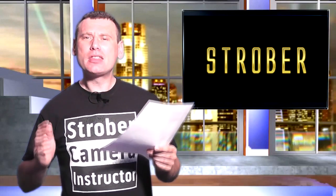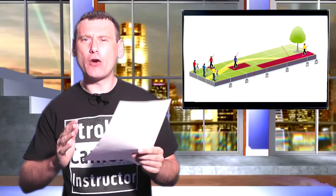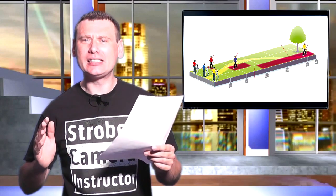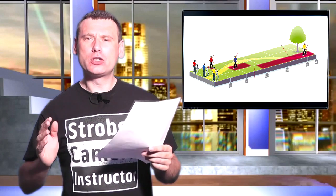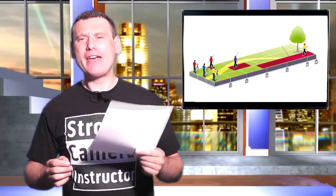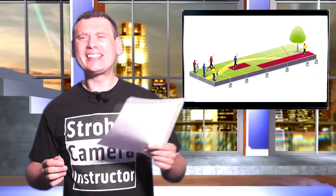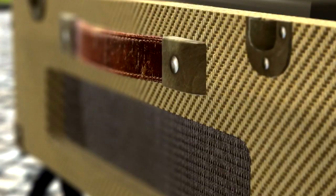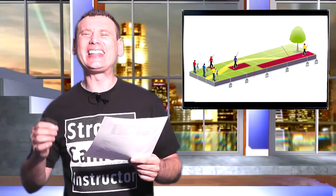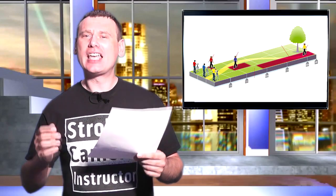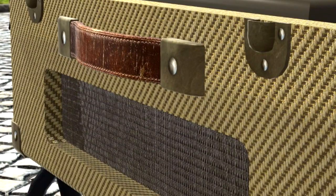What is depth of field in photography? Depth of field relates to the zone of focus or sharpness within your photograph. If you use a wide aperture, you're going to get a shallow zone of focus. If you use a narrow aperture, then you're going to get a longer zone of sharpness.